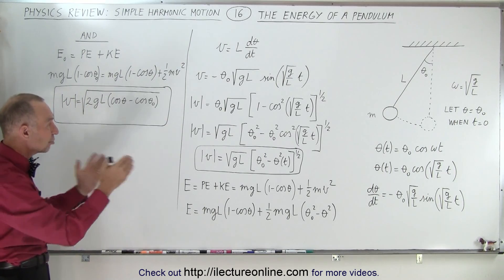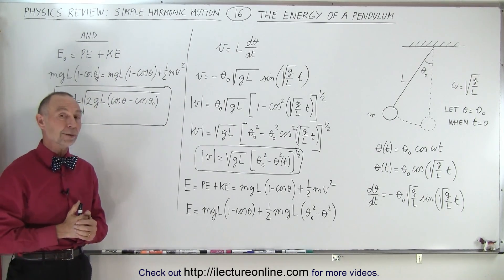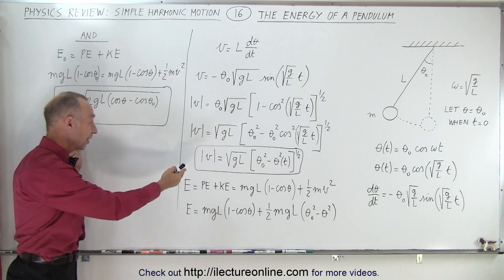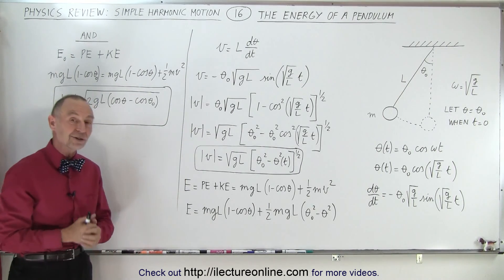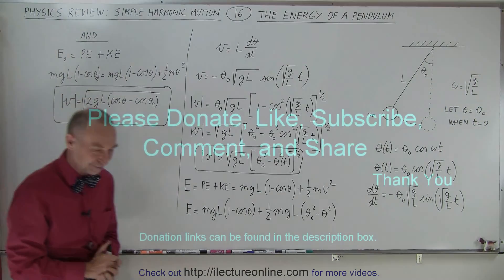And that's how we can take a look at the energy of a pendulum, and from that derive the equation for the velocity as well. So now we have two equations for the velocity, and two equations for the energy of a pendulum. And that is how it's done. Thank you.